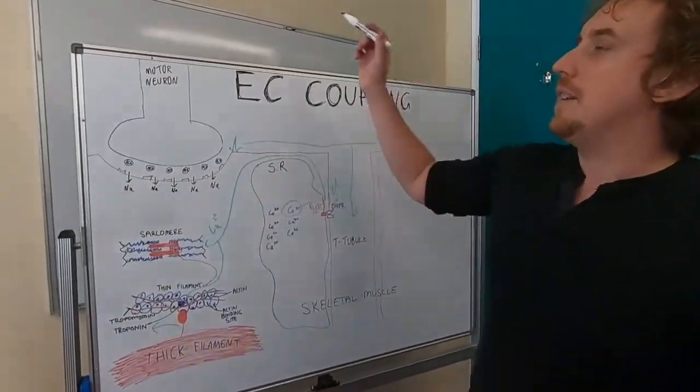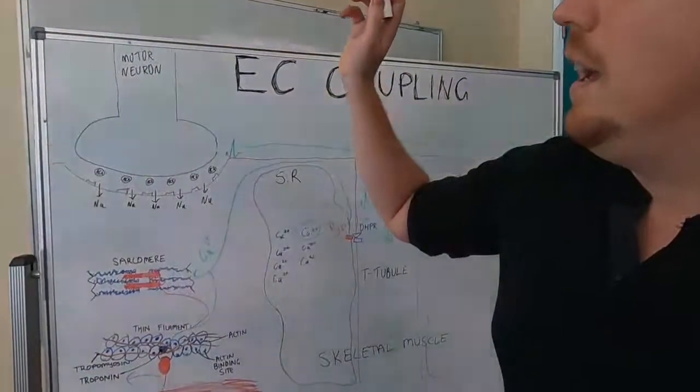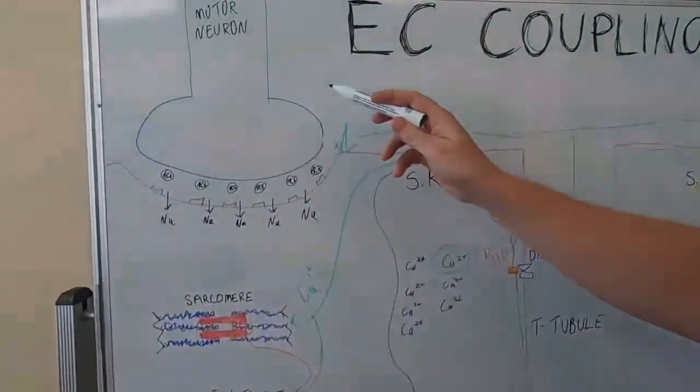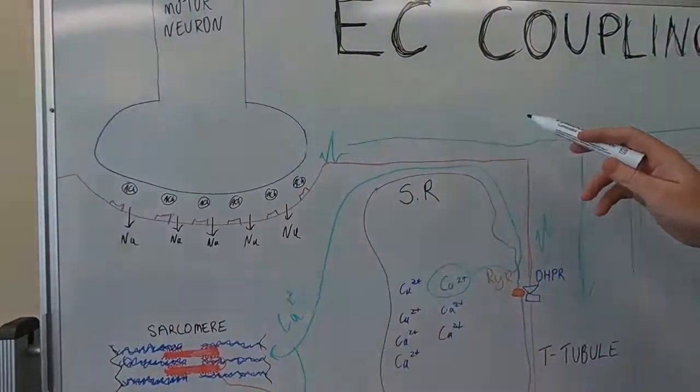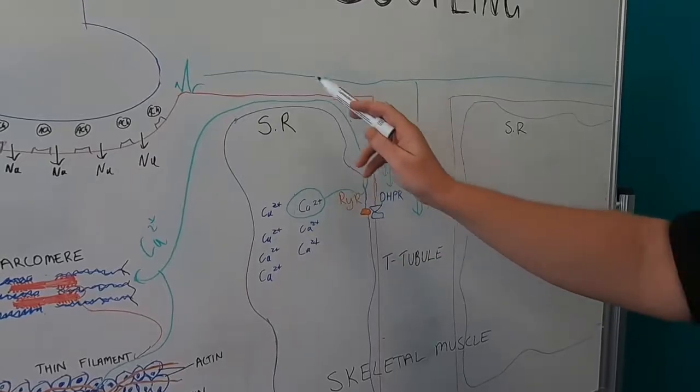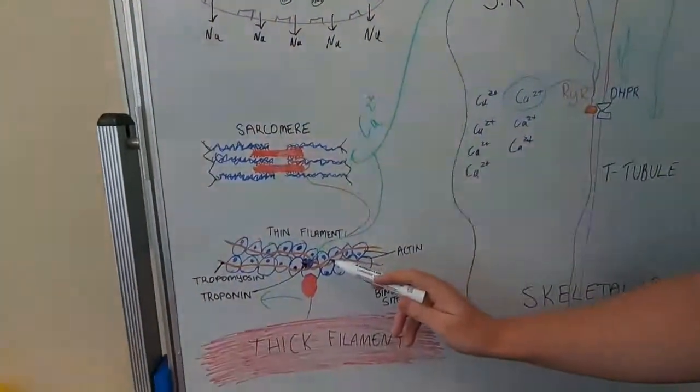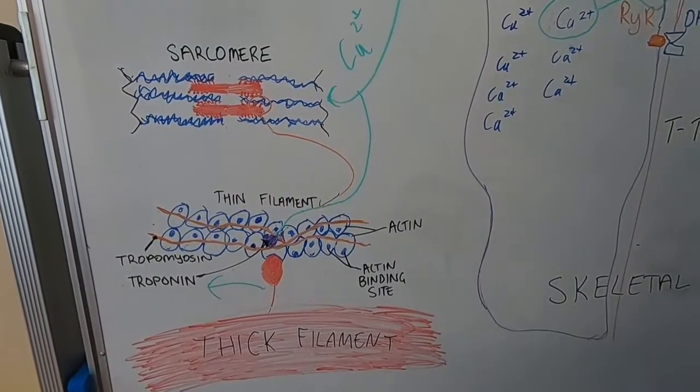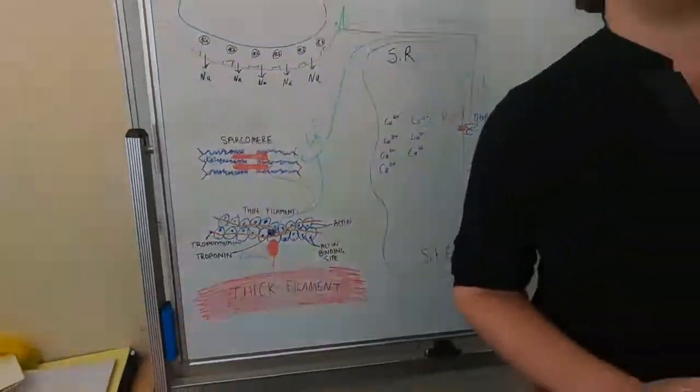So you can see how, if we take it back to the beginning, electrical impulses in the form of action potentials from the nervous system will cause an action potential to spread across the muscle, leading to release of calcium from the sarcoplasmic reticulum, and that calcium release is the thing which allows for myosin to interact with our thin filaments and muscle contraction to occur.